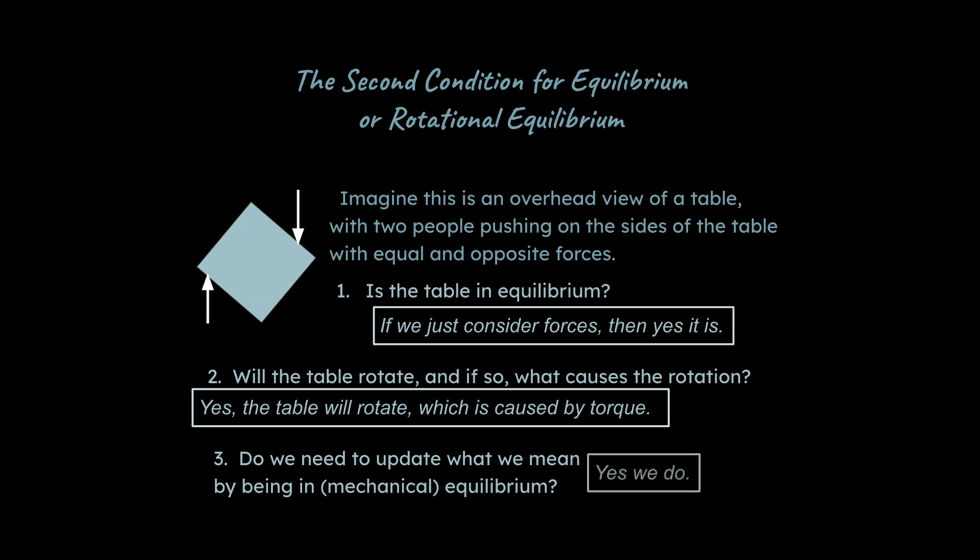So how do we update our definition for equilibrium? Well, we're going to need to incorporate torque, and so we're going to say now equilibrium, or you could say mechanical equilibrium, means zero net force and zero net torque on an object. So this object is actually not in equilibrium. It will experience an acceleration from these forces, even though there's no net force because those forces are equal and opposite to each other. There is going to be a net torque because of where they are placed, and that will cause an angular acceleration.